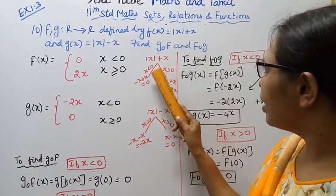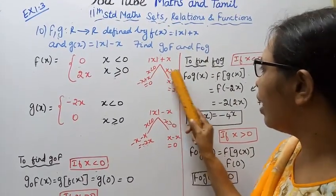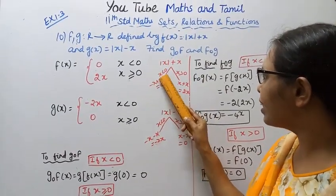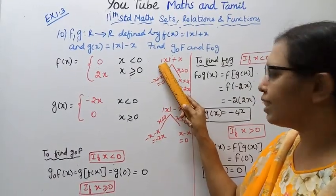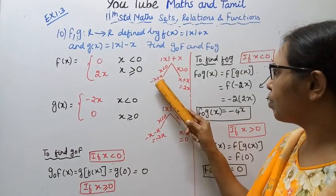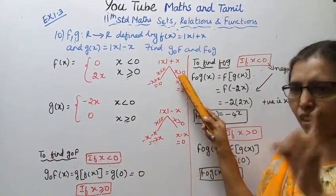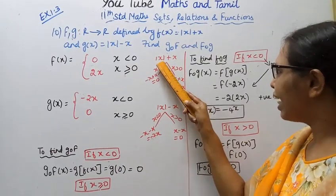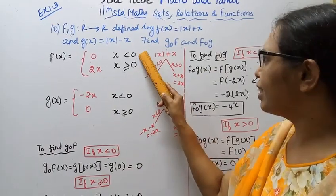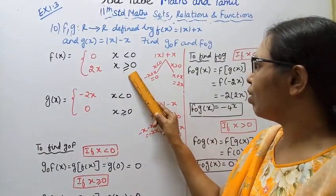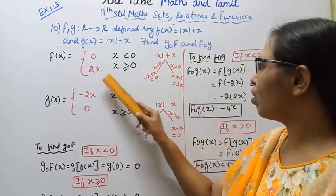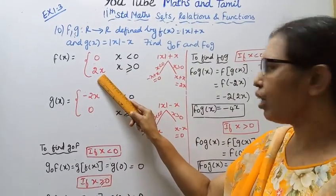For f(x) = |x| + x: when x is less than 0, |x| = -x, so -x + x = 0. When x is greater than or equal to 0, |x| = x, so x + x = 2x. Therefore f(x) = 0 when x < 0, and f(x) = 2x when x ≥ 0.